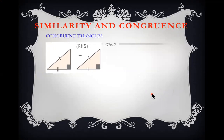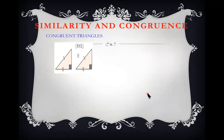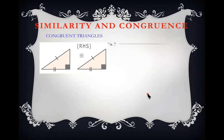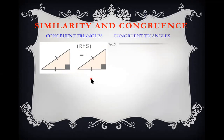Similarity and congruency: in congruent triangles we examine triangles based on their properties. One example is Right angle, Hypotenuse, Side (RHS). The triangles share a 90-degree angle, and two other corresponding sides are equal — so the reason is right angle hypotenuse side.